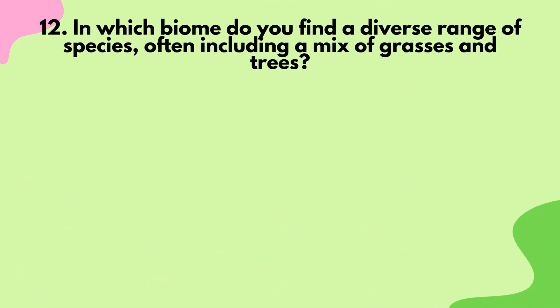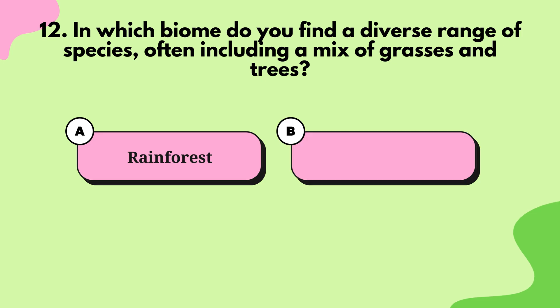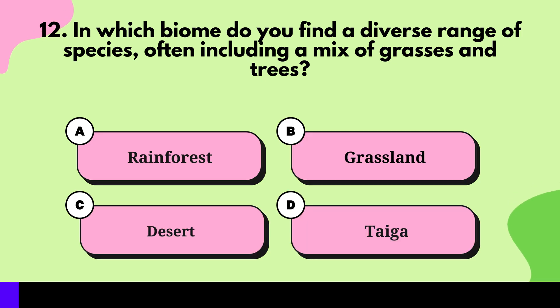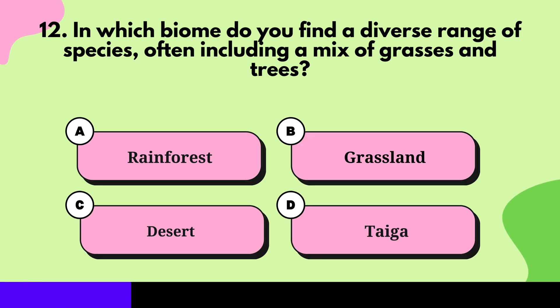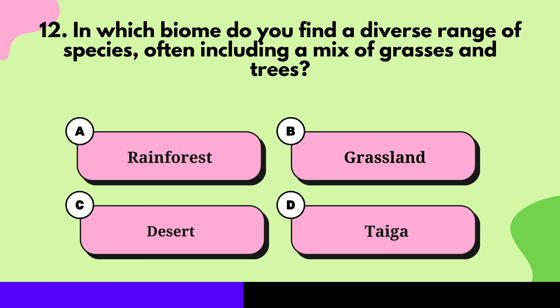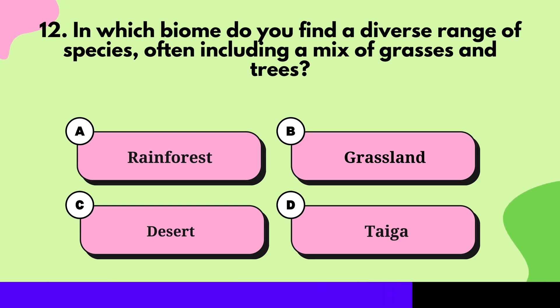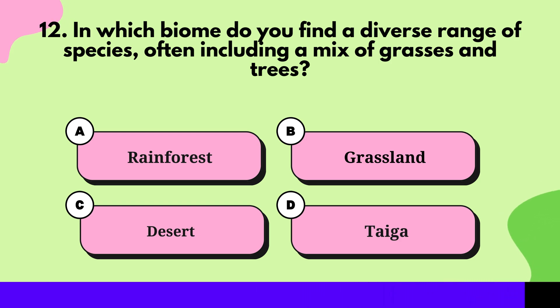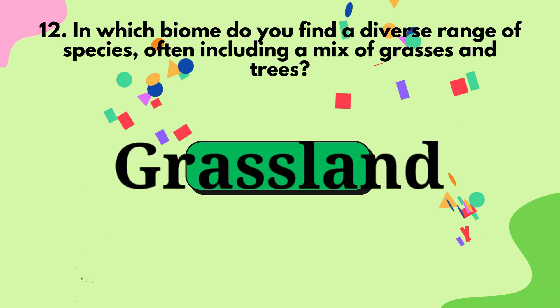In which biome do you find a diverse range of species, often including a mix of grasses and trees? Grassland.